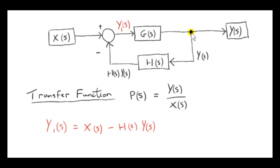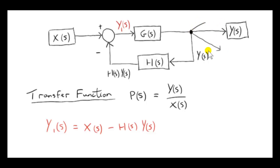At a takeoff point, the same signal may leave on many different paths. We could have a path here and we have the same signal y(s). We could have many more — the same signal y(s) leaves each of those paths. So y(s) is the output here, so it must be the output down here as well.